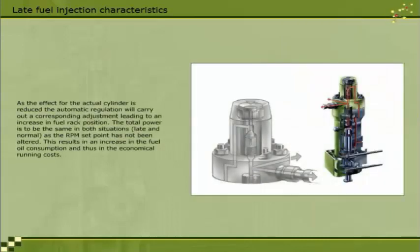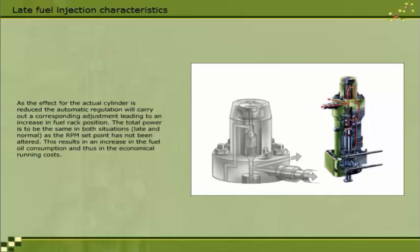As the effect for the actual cylinder is reduced, the automatic regulation will carry out a corresponding adjustment leading to an increase in fuel rack position. The total power is to be the same in both situations — late and normal — as the RPM set point has not been altered. This results in an increase in the fuel oil consumption, and thus in the economical running costs.